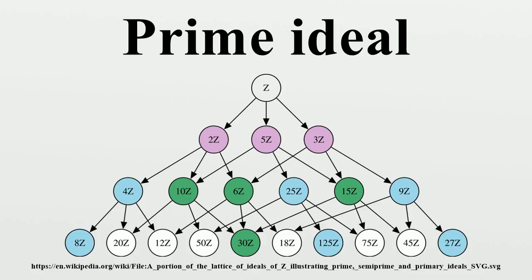Prime ideals for commutative rings: An ideal P of a commutative ring R is prime if it has the following two properties. If A and B are two elements of R such that their product AB is an element of P, then A is in P or B is in P. P is not equal to the whole ring R.